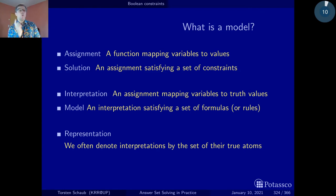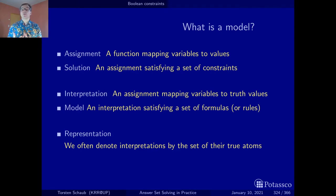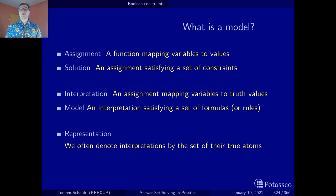You may remember this slide from the introductory section, where we hadn't even talked about stable models yet — we just wanted to look at the concept of a model. The ground truth is that we deal with assignments and solutions. Interpretations and models are a specialization of this to the logical case where the range of variables is binary — just true and false — and the constraints are given by logical formulas. In constraint processing we look at assignments and solutions, and in satisfiability testing we look at interpretations and models.